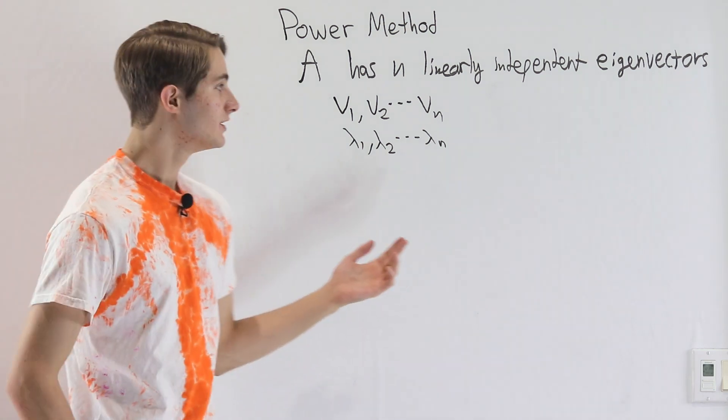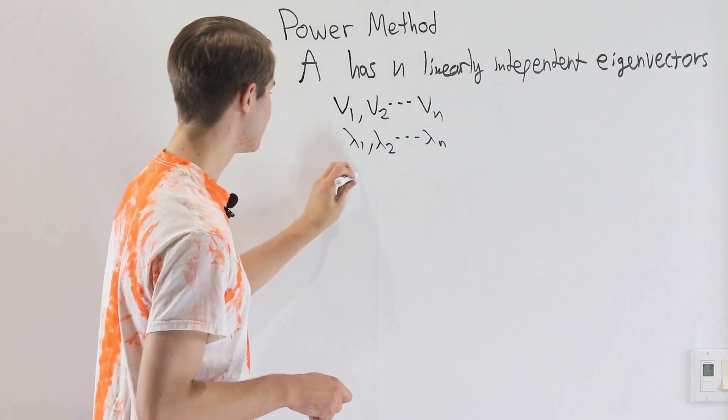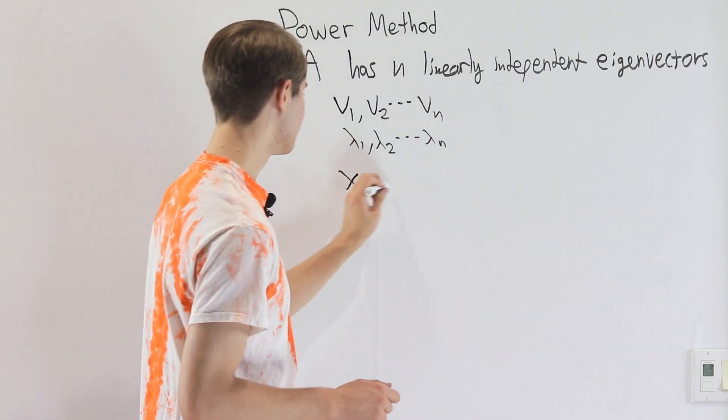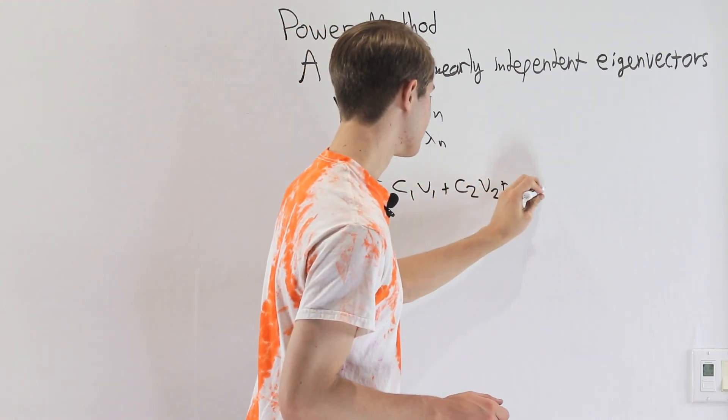So what this means is that, for example, for a 2 by 2 matrix with 2 eigenvectors, we can express any vector x as a linear combination of these eigenvectors, just like this.